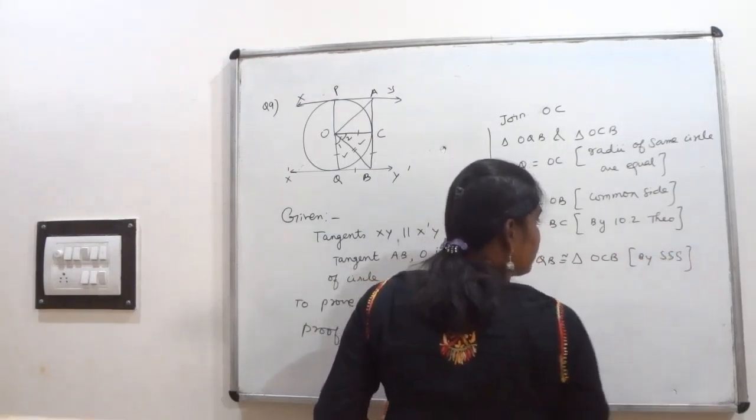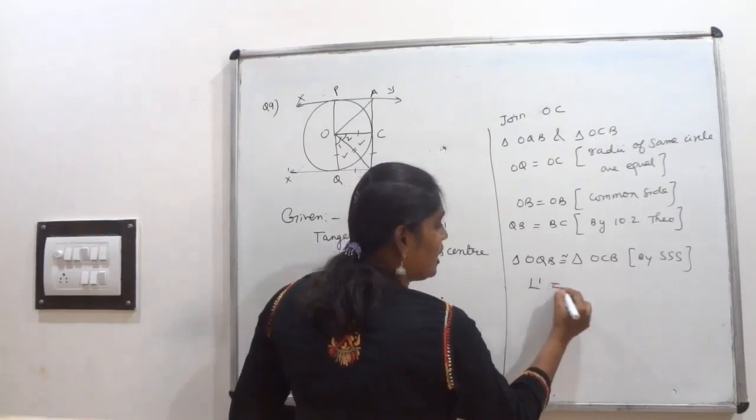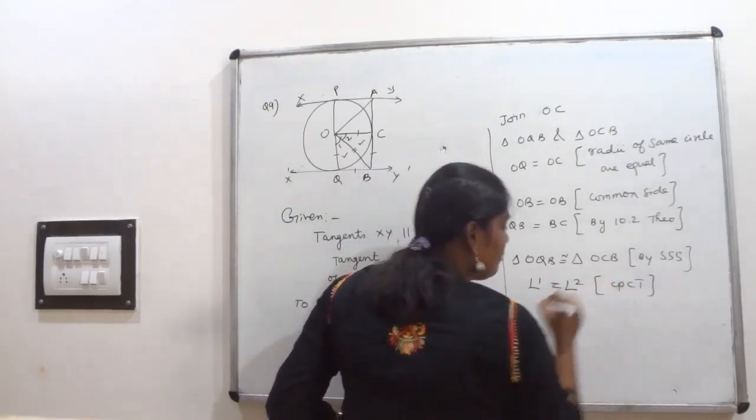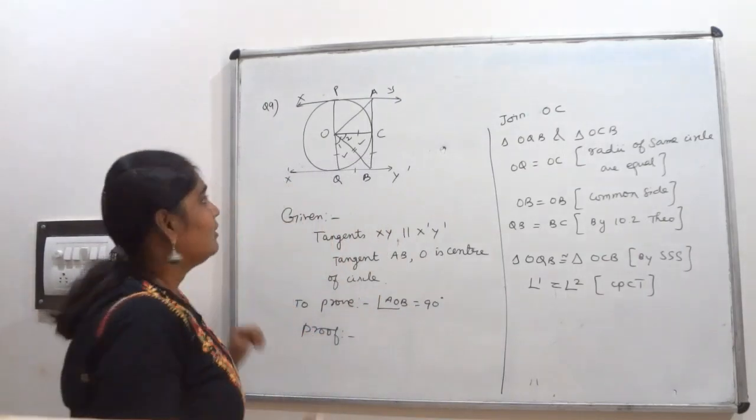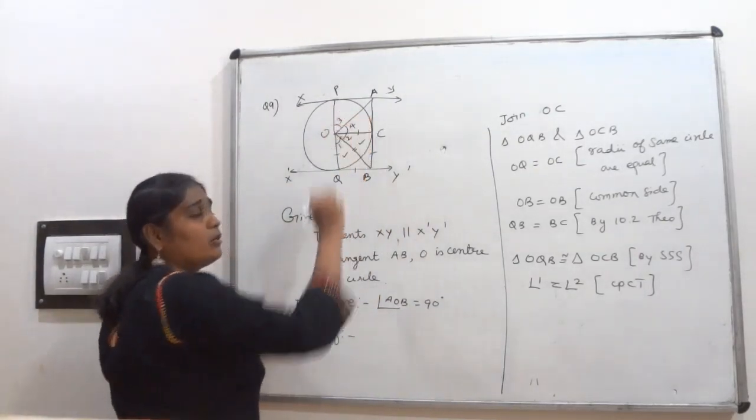Triangle OQB is congruent to triangle OCB by triple S. Triple S means side, side, side. Both are congruent. Therefore I can tell that angle 1 equal to angle 2 by CPCT. Once I have told this one, take these two triangles also, you will get the same thing. Angle 3 equal to angle 4.